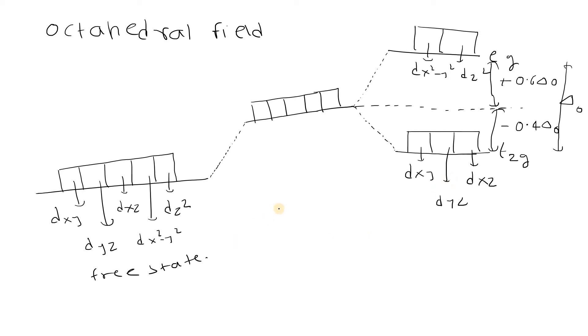The formula for CFSE calculation is minus 0.4 into the number of electrons in the t2g orbital into Δ0 plus 0.6 into the number of electrons in the eg orbital into Δ0 plus n into P, the number of electron pairs and pairing energy.